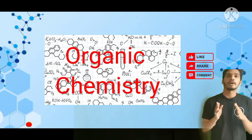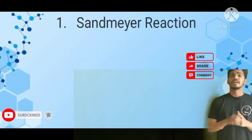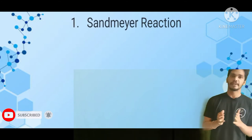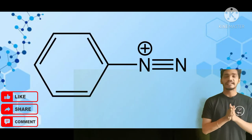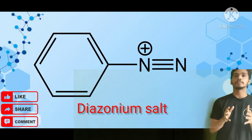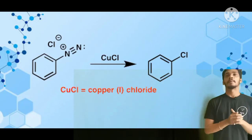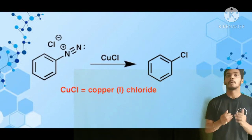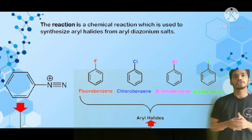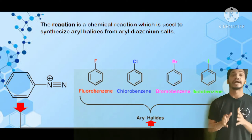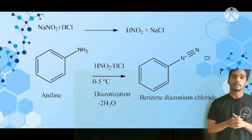Hello everyone, today we're going to talk about some very important reactions in organic chemistry. The first is the Sandmeyer reaction. The Sandmeyer reaction is a reaction in which a diazonium salt is converted into aryl halides with the help of copper as a catalyst. So the Sandmeyer reaction is the preparation of aryl halides with the help of diazonium salts — we first prepare the diazonium salt.